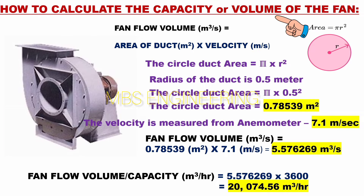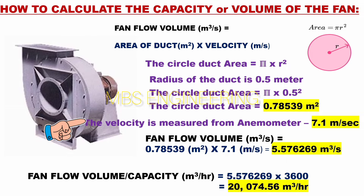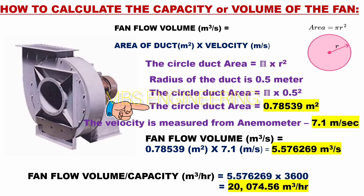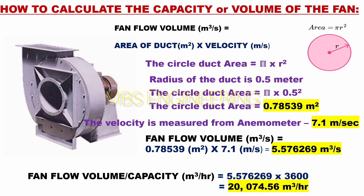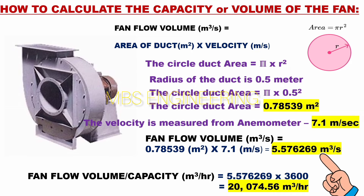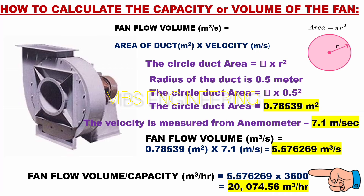The fan flow volume or capacity is equal to the velocity multiplied by the suction ducting area. The anemometer-obtained suction velocity is 7.1 meters per second, and the suction ducting area is 0.78539 square meters. Therefore, the fan flow volume is 0.78539 × 7.1 = 5.576269 cubic meters per second. Converting to cubic meters per hour: 5.576269 × 3600 = 20,074.56 cubic meters per hour.